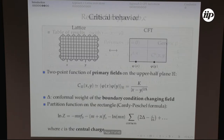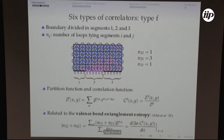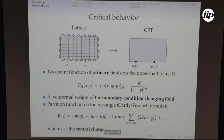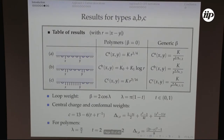For type F, the parameter tau comes back when I discuss results for type F. The loop weight beta equals 2 cosine lambda, and it's related to the parameter t as lambda equals pi times (1 minus t).